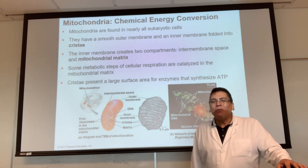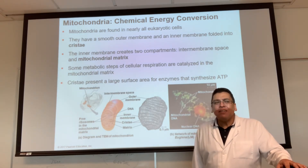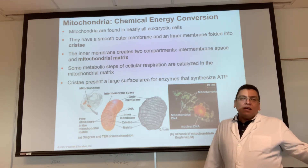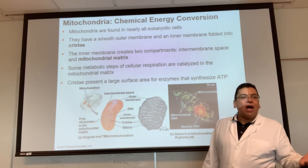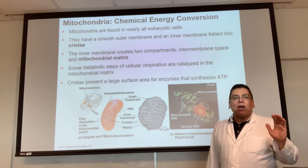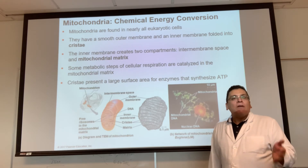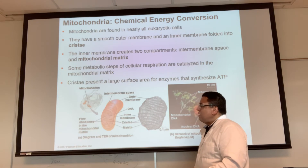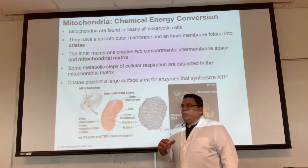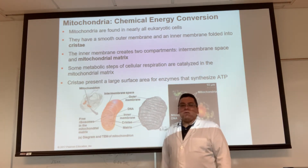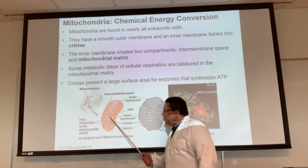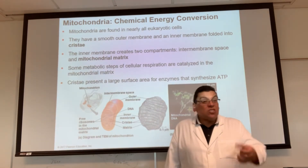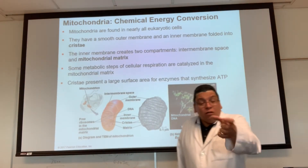One possible explanation is that's where they came from — they were bacteria. That's the theory of endosymbiosis. Here's another fact that supports it: if you look closely, there's a circular piece of DNA inside your mitochondria — it looks like a rubber band.